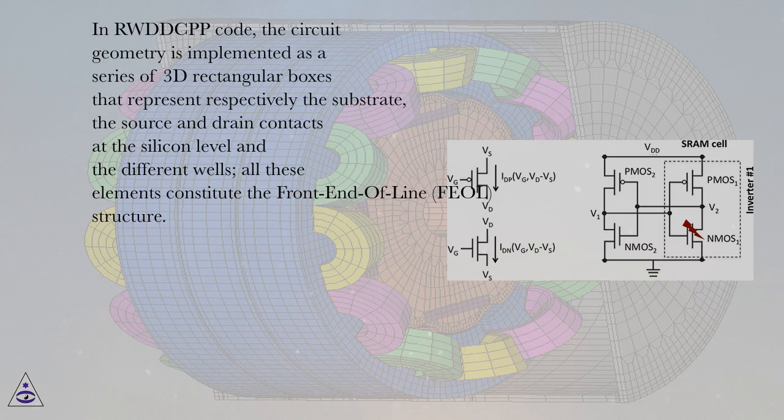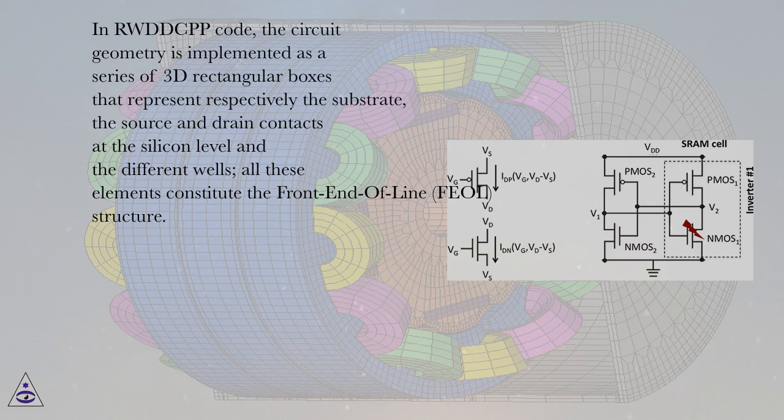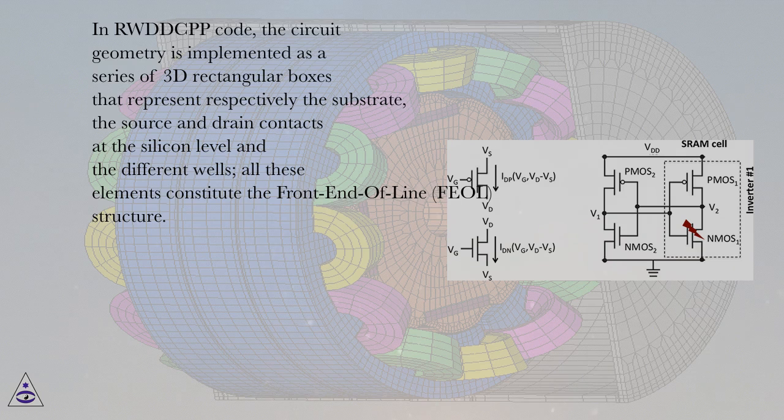In our RWDD-CPP code, the circuit geometry is implemented as a series of 3D rectangular boxes that represent respectively the substrate, the source and drain contacts at the silicon level and the different wells. All these elements constitute the front end of line (FEOL) structure.